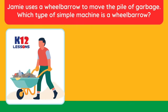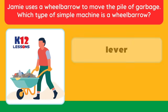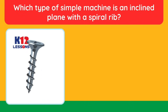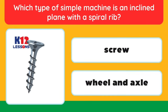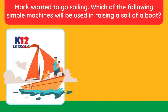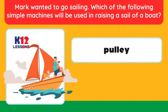Jamie uses a wheelbarrow to move a pile of garbage. Which type of simple machine is a wheelbarrow? Answer: lever or wheel and axle. Which type of simple machine is an inclined plane with a spiral rib? Answer: screw. Mark wanted to go sailing. Which simple machine will be used to raise the sail of a boat? Answer: pulley.